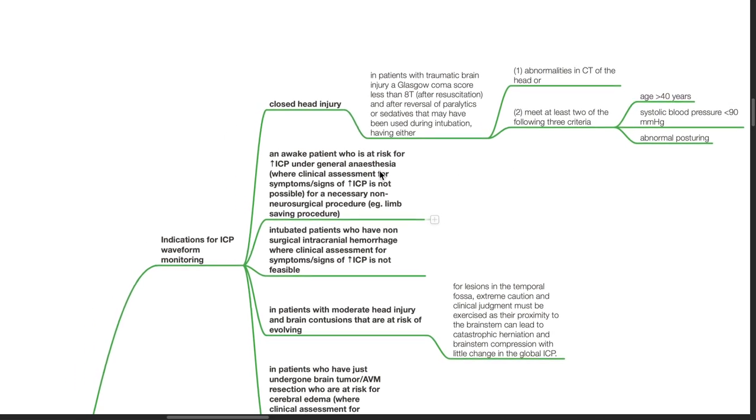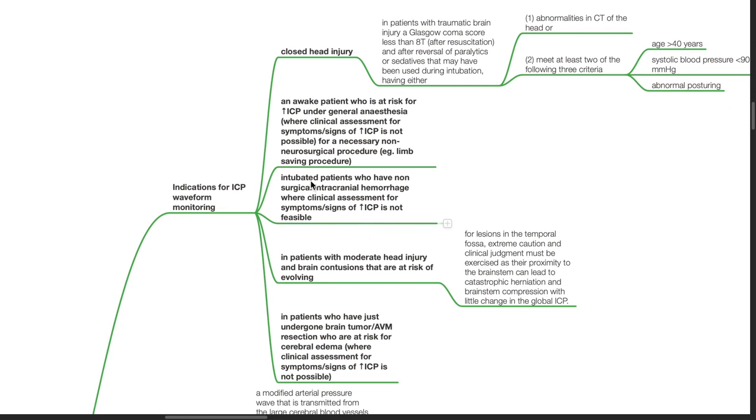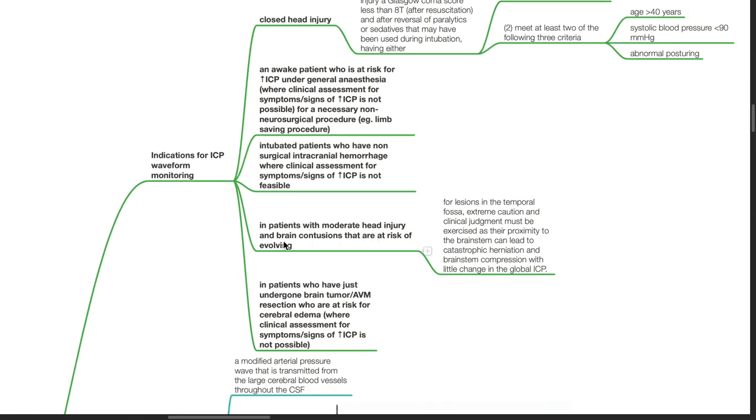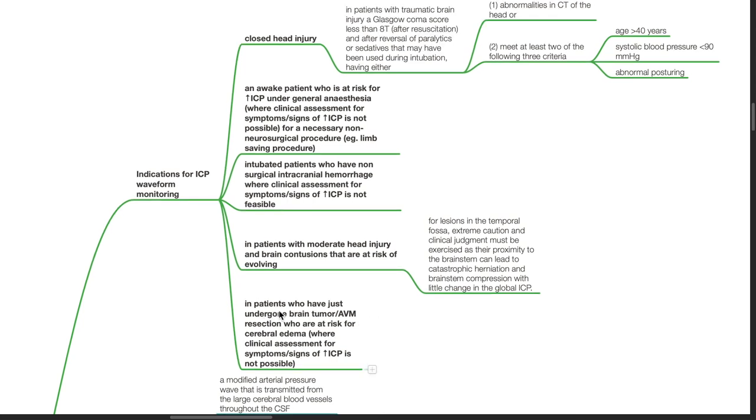An awake patient who is at risk of increased ICP under general anesthesia where clinical assessment for symptoms or signs of raised ICP is not possible for a necessary non-neurosurgical procedure such as a limb-saving procedure. Intubated patients who have non-surgical intracranial hemorrhage where clinical assessment for symptoms or signs of raised ICP is not feasible. In patients with moderate head injury and brain contusions that are at risk of evolving. For lesions in the temporal fossa, extreme caution and clinical judgment must be exercised as their proximity to the brain stem can lead to catastrophic herniation and brain stem compression with little change in the global ICP. In patients who have just undergone brain tumor or AVM resection who are at risk for cerebral edema where clinical assessment for symptoms or signs of raised ICP is not possible.